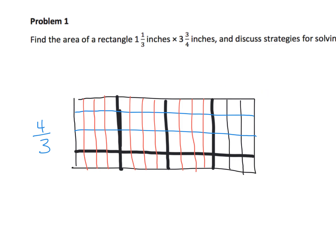We have four fourths plus four fourths plus four fourths — that's twelve fourths, three times four — and then plus three more fourths. So we now have fifteen fourths going across the top.